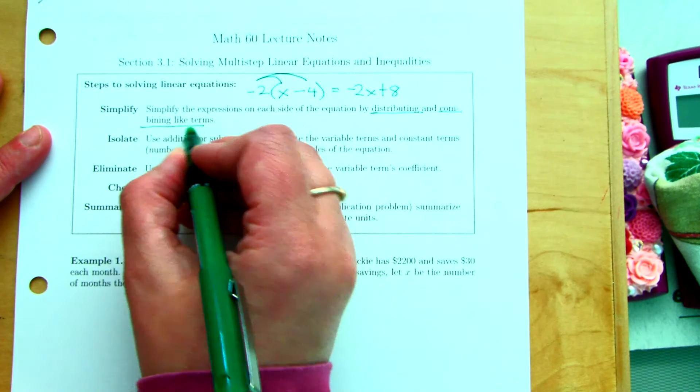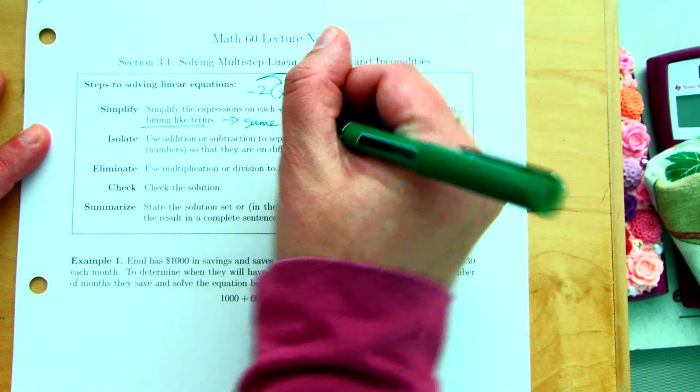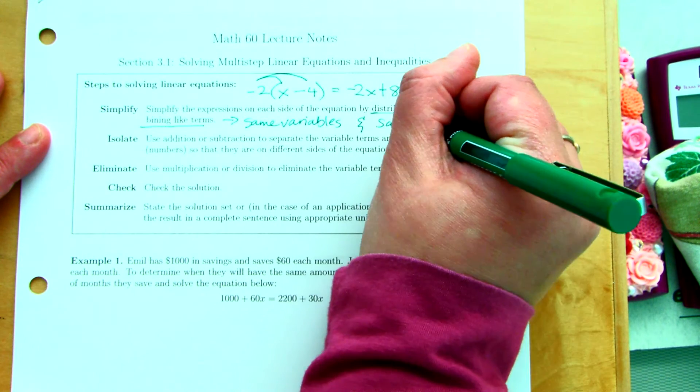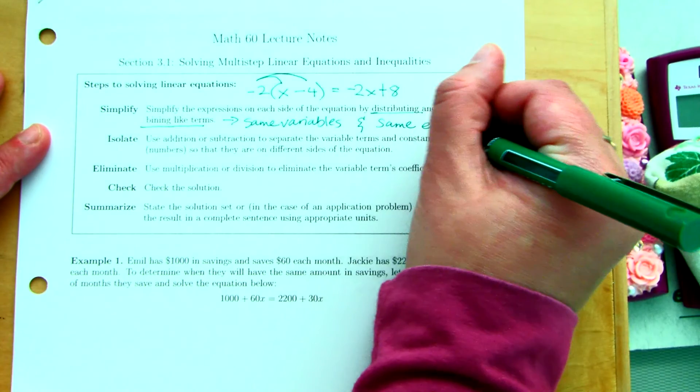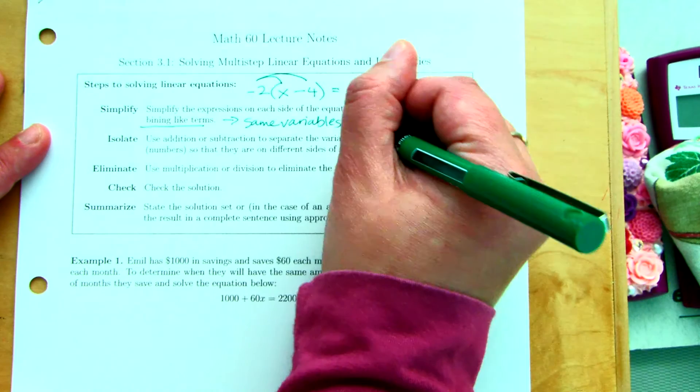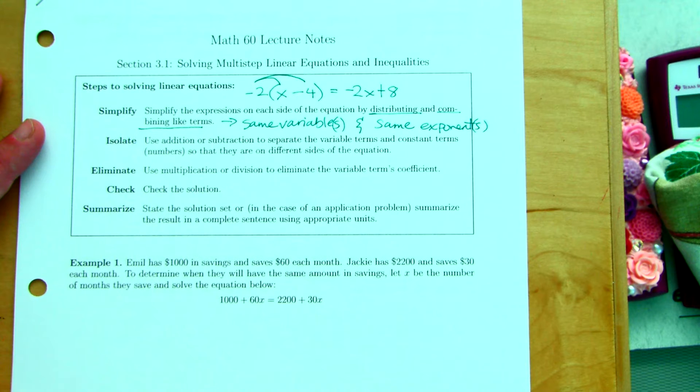What do like terms have to have? They have to have two things in common. The same variables and the same exponents. And I'll put exponents and variables because we can have multiple variables.